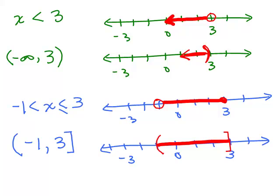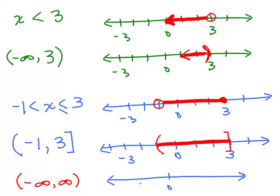What if you wanted the entire number line to be your answer? That would be negative infinity to positive infinity, and you always use parentheses. The way this would look on a graph — say from negative 5 to 5 — it's just the whole number line, the whole graph. So if you've got the whole number line, it's just between negative infinity and positive infinity.